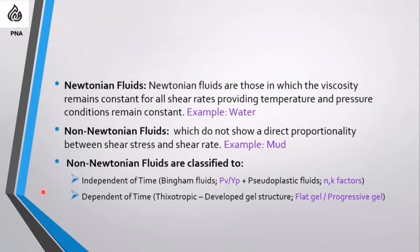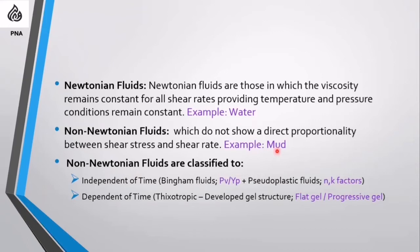We have Newtonian and non-Newtonian fluids. Newtonian fluids are those in which viscosity remains constant for all shear rates, provided temperature and pressure conditions remain constant. When we change the shear rates on the fluid, viscosity remains constant. An example of a Newtonian fluid is water — water is the ideal Newtonian fluid; its viscosity will not change if you change the shear rate.